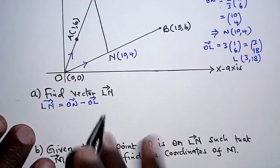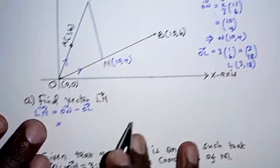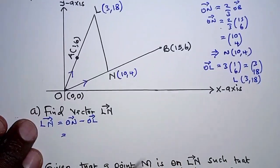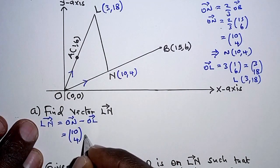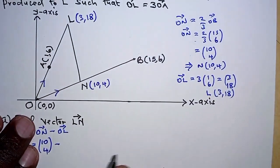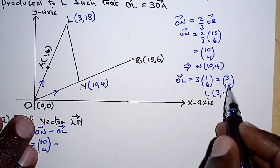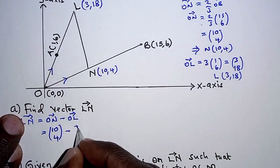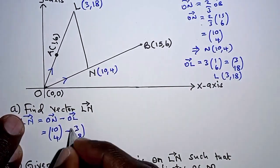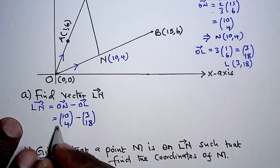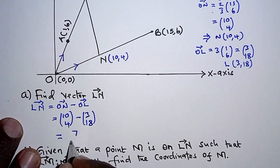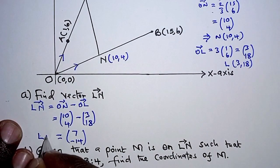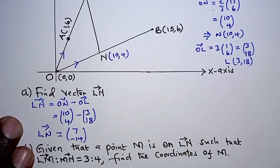For part A, we have: LN equals ON minus OL. ON is (10, 4) and OL is (3, 18). Taking the difference, this becomes (7, -14). And that is vector LN as required for part A.